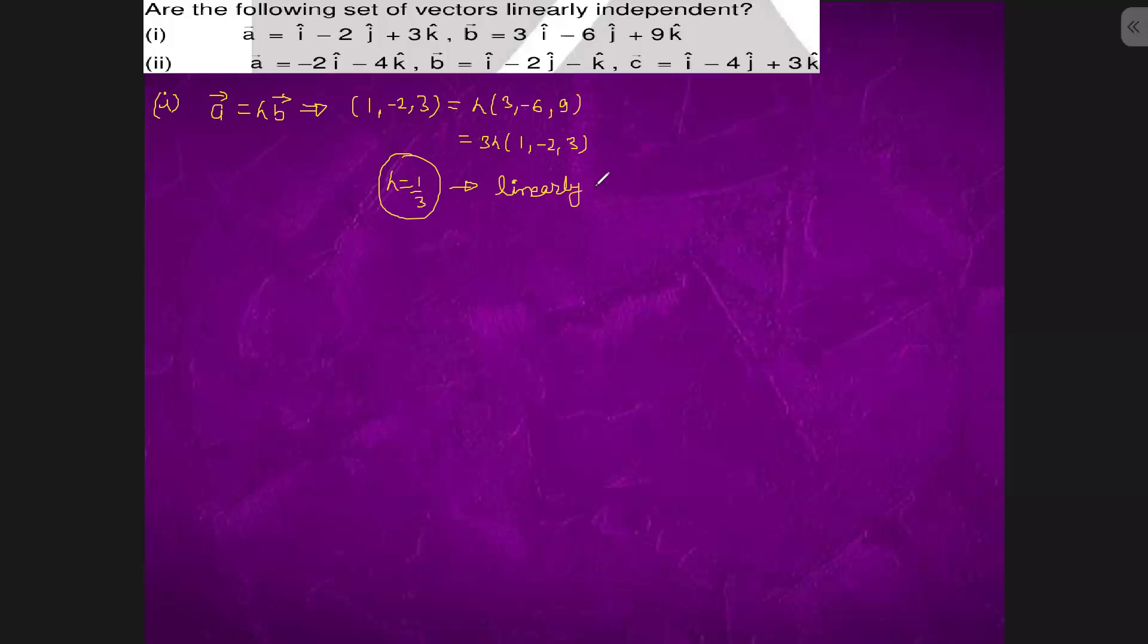Second problem: if a vector equals B vector plus lambda times C vector for some lambda, then they are linearly dependent. Since they are dependent, isn't it, if I solve it...